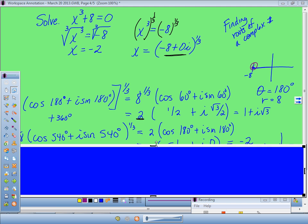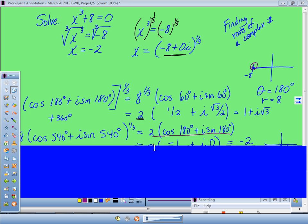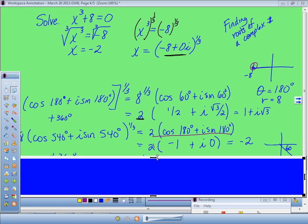You take 8 to the 1/3rd, which gets me the 2 over here. I take 1/3rd times 540 degrees, which gets me 180. So now here on the right hand side, I've got 2 cosine 180 plus i sine 180. If you fill in the values for cosine and sine of 180, which are negative 1 and 0, you'll discover that when you distribute the 2, hey, wow, I just got negative 2. There's the answer we knew from algebra.